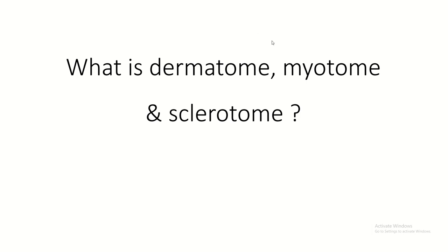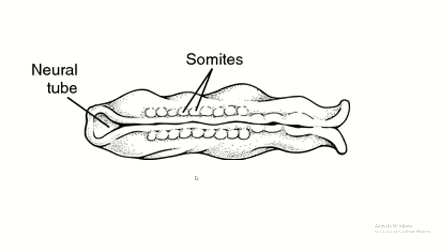Assalamu alaikum, I welcome all to my channel. Today I would like to discuss what is dermatome, myotome, and sclerotome. These are the parts of the somite. This is the neural tube, this is the cranial neural pore, this is the caudal neural pore, and on two sides of the neural tube is the location of the paraxial mesoderm. This paraxial mesoderm forms segmentation known as the somatomere and somite. So the dermatome, myotome, and sclerotome are the parts of the somite.